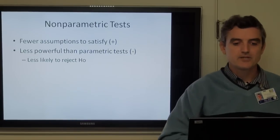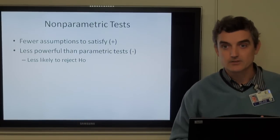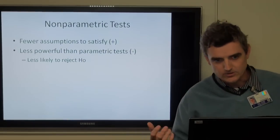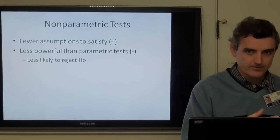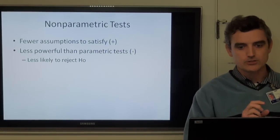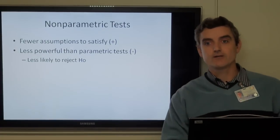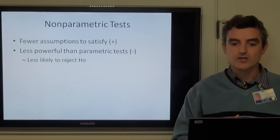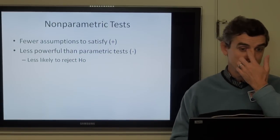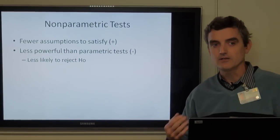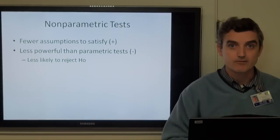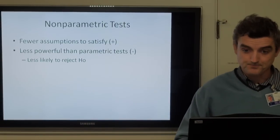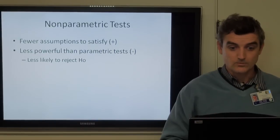The nice thing about non-parametric tests is that you have fewer assumptions to satisfy — it doesn't need to follow the normal distribution, and you don't need at least five observations in each cell. But there's a sacrifice: it's less powerful than parametric tests, which means you're less likely to reject the null hypothesis — less likely to find a result when it's actually there.